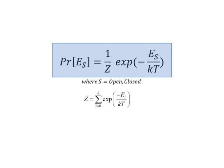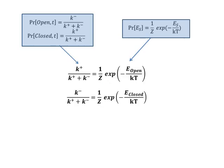The probability of finding an ion channel in a given state is given by 1 over z, times the exponential of minus the corresponding energy, over kT where z is the partition function and k is the Boltzmann constant.